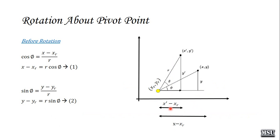Now, if we want to perform rotation about a pivot point (xr, yr), we derive a new formula. Before rotation: cos phi = (x − xr) / r, giving equation: x − xr = r cos phi. And sin phi = (y − yr) / r, giving: y − yr = r sin phi. After rotation at angle phi + theta: cos(phi + theta) = (x dash − xr) / r, and sin(phi + theta) = (y dash − yr) / r. Applying the addition formulas and substituting, we get equations 7 and 8 for rotation about a pivot point.